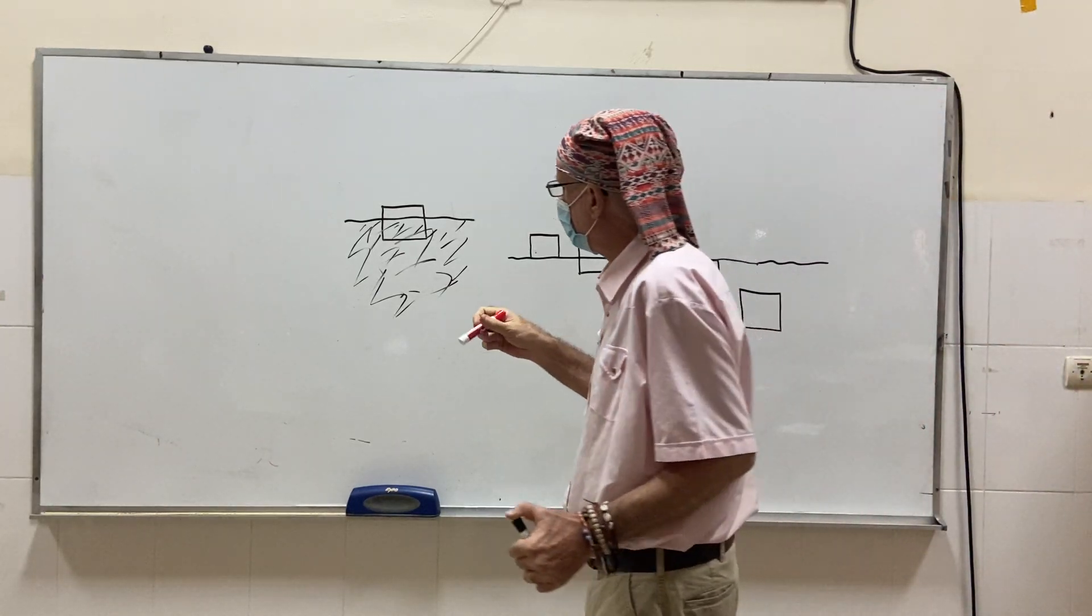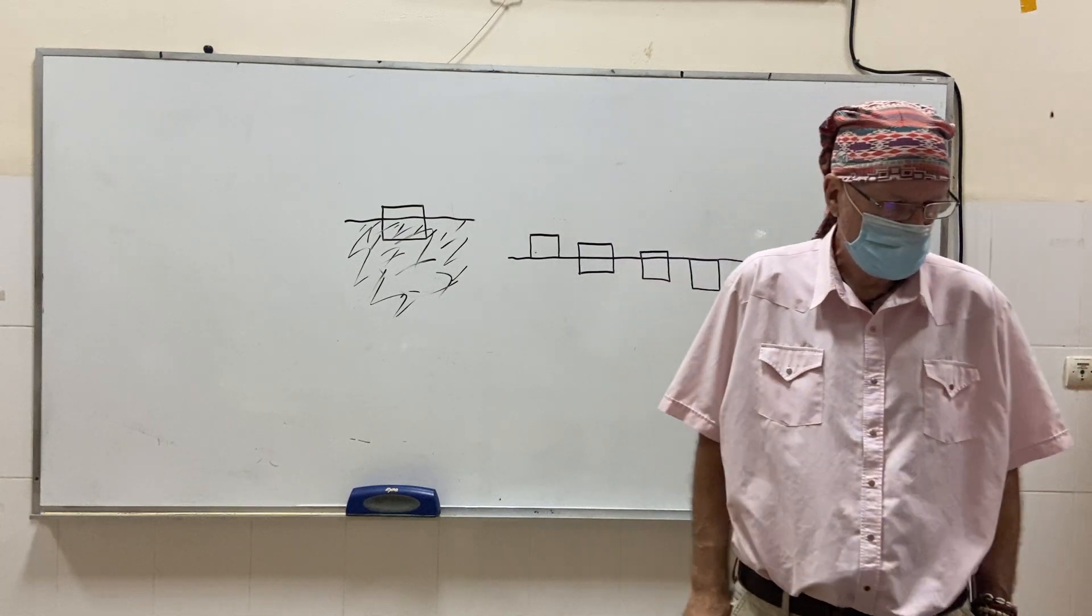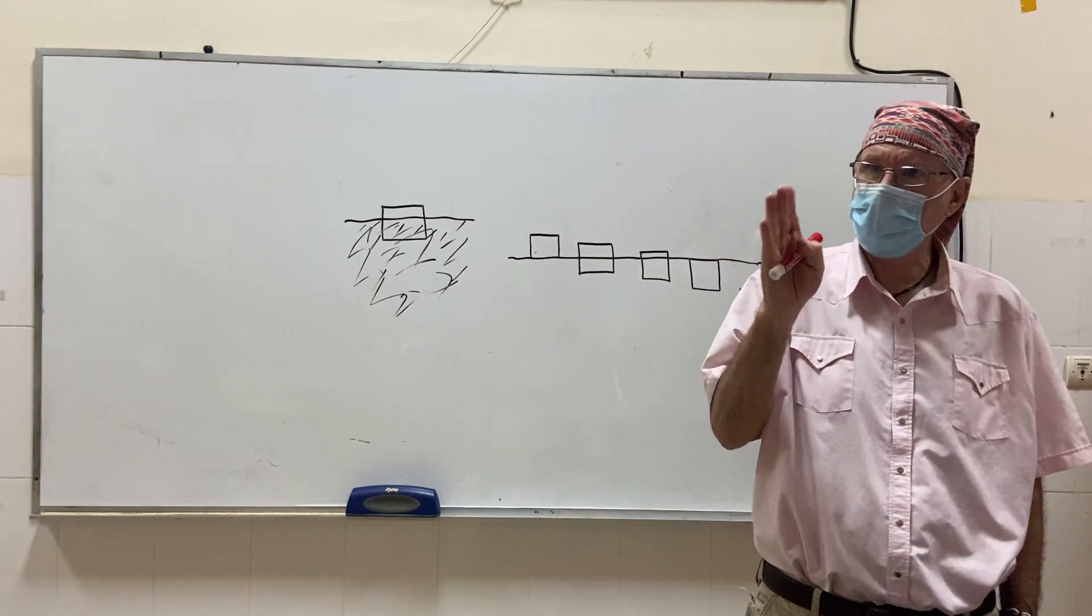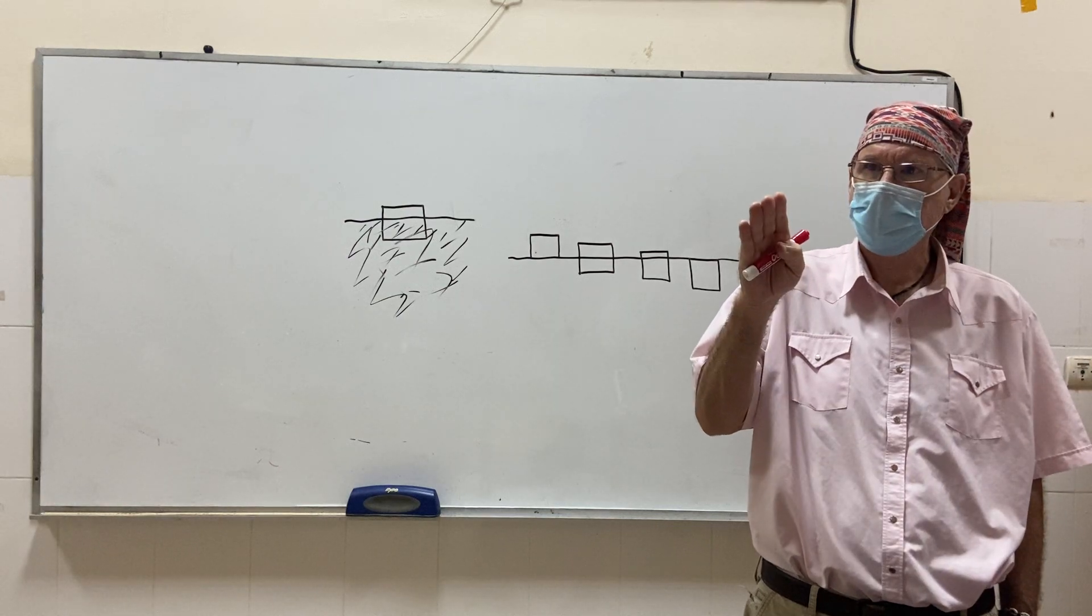All right, first one says, we have a block. Looks just like that. It says A. The block is floating in fluid, correct?